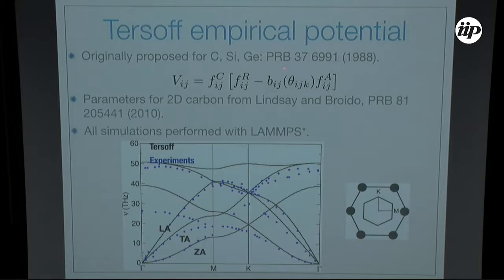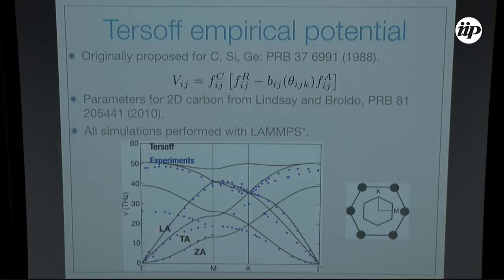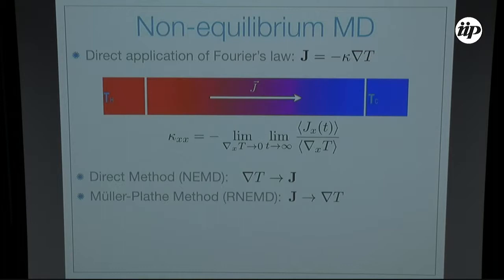Let's begin with graphene. We use the Tersoff potential, which was originally proposed for carbon, silicon, and germanium in bulk form, but was reparametrized in 2010 specifically for graphene and nanotubes. These are the phonon dispersions from the potential — the continuous lines — and the points are from neutron scattering experiments. It describes really well the acoustic modes, though not the optical modes so well. But most of the heat is transported by acoustic modes anyway.